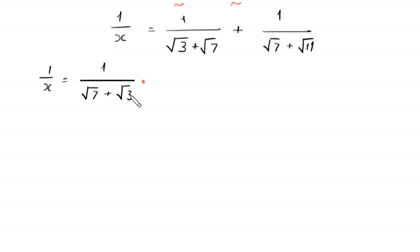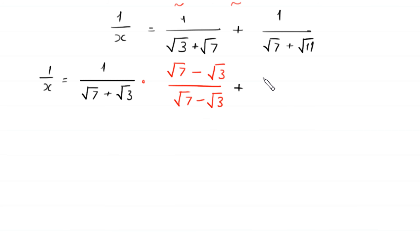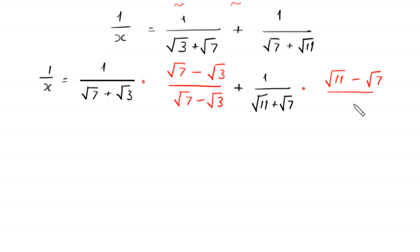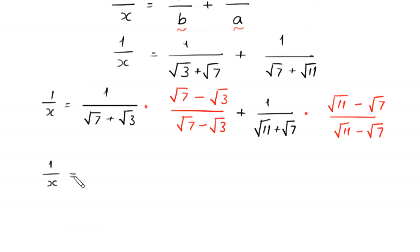To rationalize, we multiply and divide the first expression by the conjugate square root of 7 minus square root of 3, over square root of 7 minus square root of 3. For the second expression, 1 over square root of 7 plus square root of 11, we multiply and divide by the conjugate square root of 11 minus square root of 7, over square root of 11 minus square root of 7.